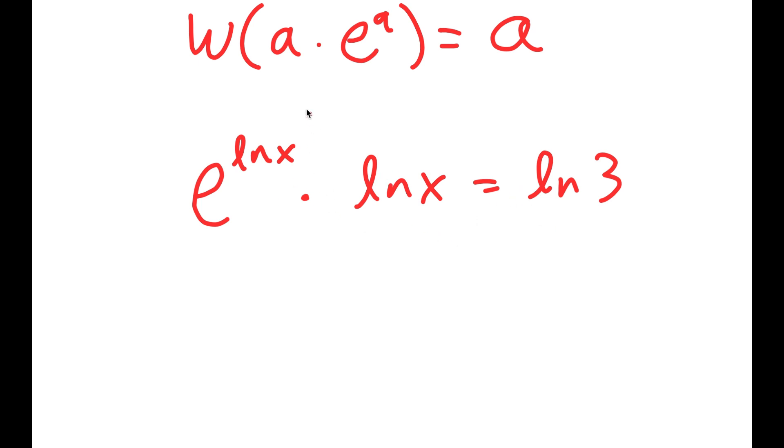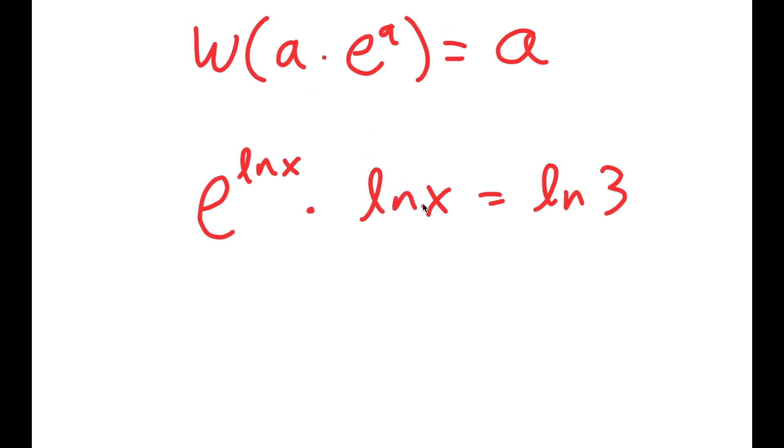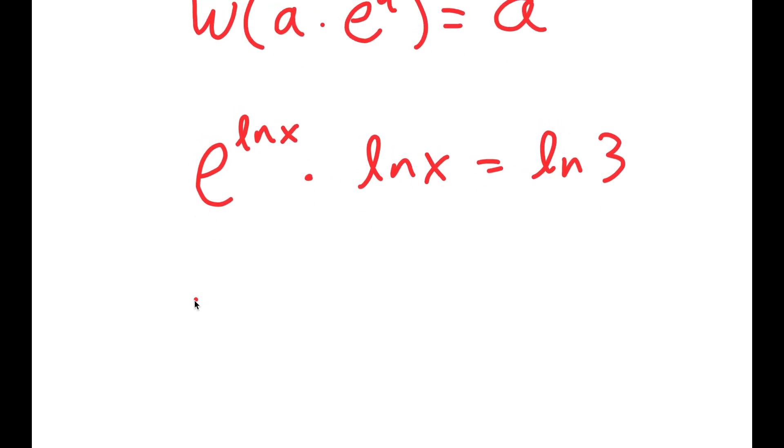So now, notice how this is in the form a times e to the power of a, with a in this case being ln x. So it's ln x times e to the power of ln x is equal to ln 3.